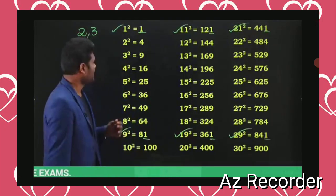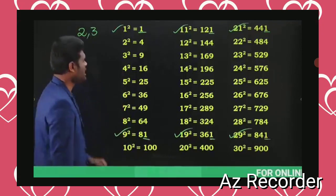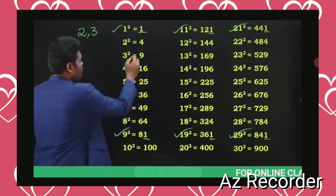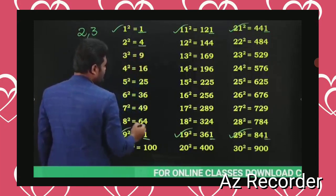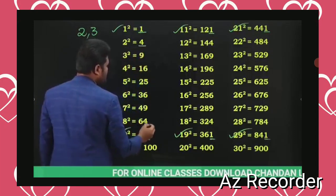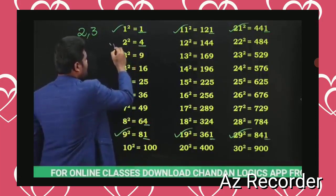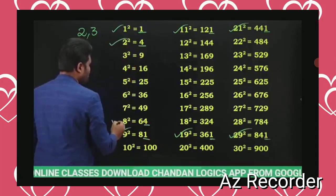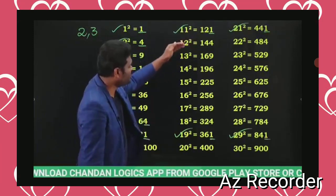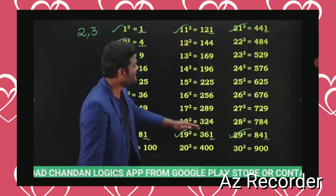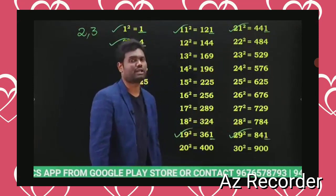Next, observe when we get 4 as the last digit. You get 4 as the last digit when the number ends in 2, and also when it ends in 8. So 4 as a last digit appears at 2 and 8, and similarly at 12, 18, 22, 28 — following the same pattern.